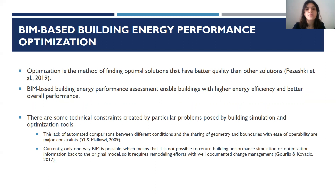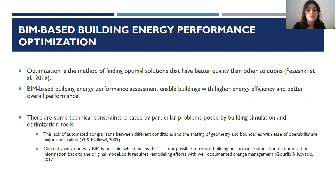BIM is used for estimating energy performance and has the capacity to provide the necessary data for optimizing the energy usage of buildings by changing parameters that affect energy consumption. However, it is not possible to optimize consumption results directly in BIM software with a single click, because of technical constraints created by building simulation and optimization tools. The main limitations are the lack of automatic comparison between different conditions, and currently only one-way BIM is possible, meaning it is not possible to return building performance simulation or optimization information back to the original model. So it requires modeling efforts with well-documented change management, and optimization can be carried out with a few extra operations after the energy analysis results are obtained.